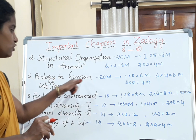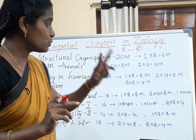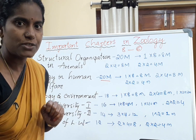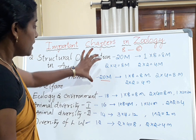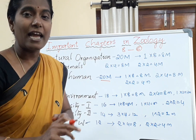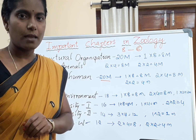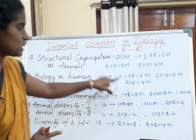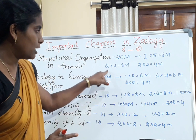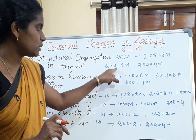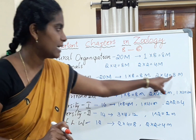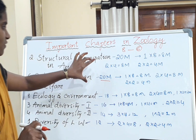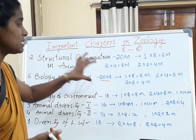In zoology, two chapters are especially important: the second chapter, Structural Organization in Animals, and the sixth chapter, Biology and Human Welfare. These two chapters carry a weightage of 20 marks each — so together that's 40 marks you can attempt. You get one essay question from each of these two chapters, and two short answers each carrying four marks, totaling eight marks, plus two very short answers from these two chapters.